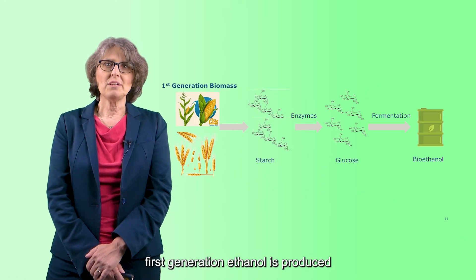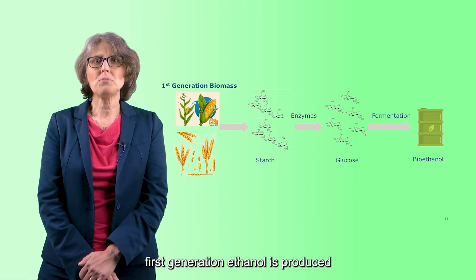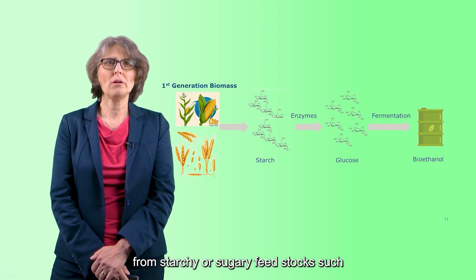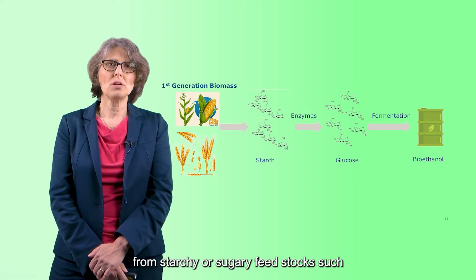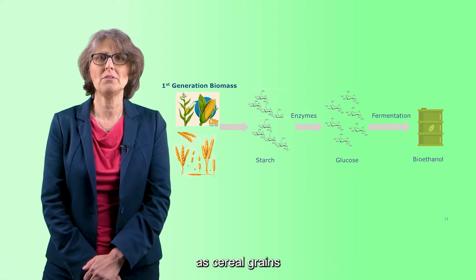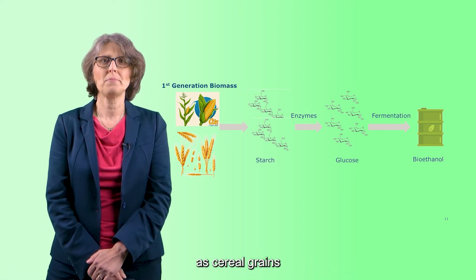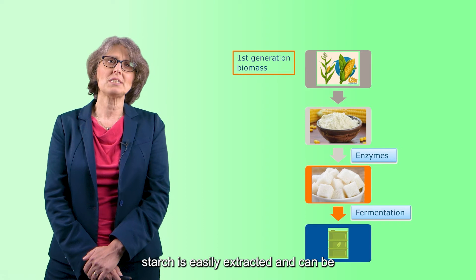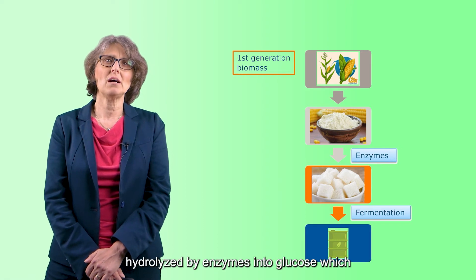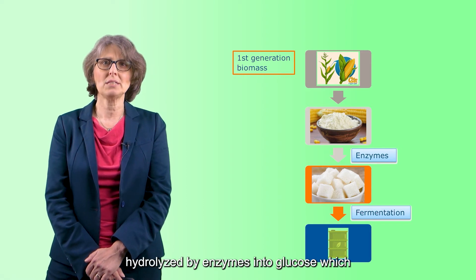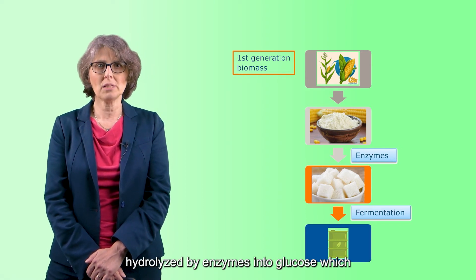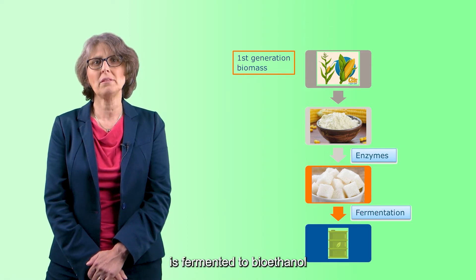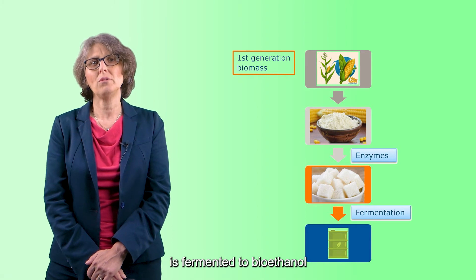First generation ethanol is produced from starchy or sugary feedstocks such as cereal grains. Starch is easily extracted and can be hydrolyzed by enzymes into glucose, which is fermented to bioethanol.